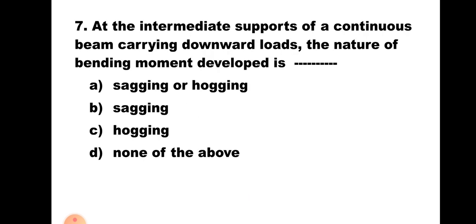Question number 7. At the intermediate supports of a continuous beam carrying downward loads, the nature of bending moment developed is: A. sagging or hogging, B. sagging, C. hogging, D. none of the above. As established earlier, if all the loads are downward, the bending moment at intermediate support is hogging in nature. Hence the correct answer is C, hogging.